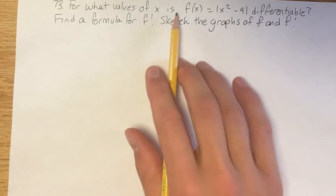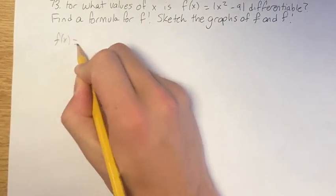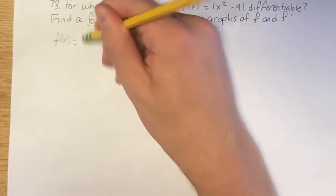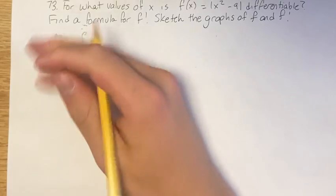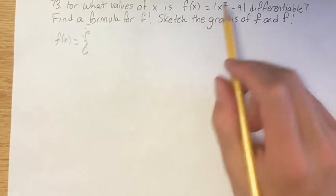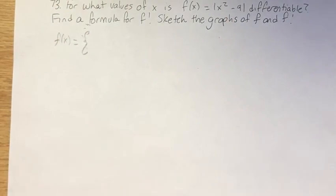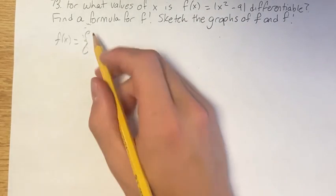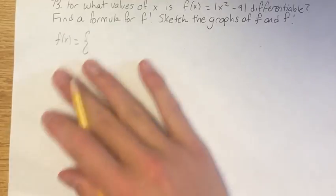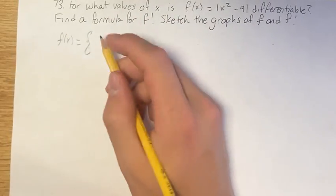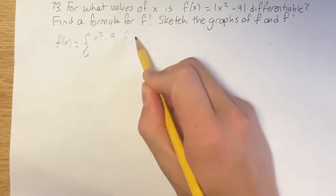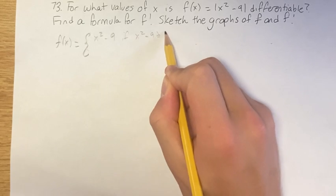The first thing we're going to do is change this into a piecewise function to see if we can get a function that we can find the derivative of more easily. Thinking about what the absolute value actually means: if the thing inside the absolute value is greater than or equal to 0, then its value doesn't change. So x squared minus 9 is going to be the value of the function if x squared minus 9 is greater than or equal to 0.